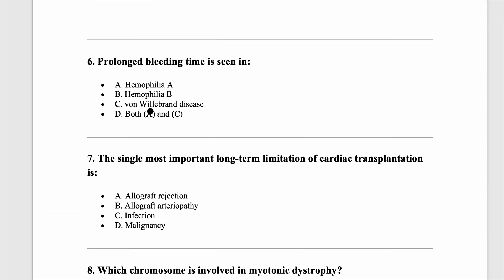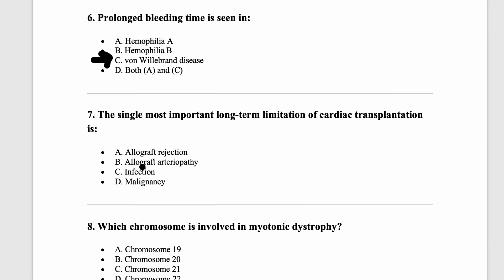Prolonged bleeding time is seen in — I don't think you will see these types of questions in 2025 PG, but the classical answer is von Willebrand disease. Even in this INICET, the most common inherited bleeding disorder goes to von Willebrand disease. In von Willebrand disease, in few variants where factor 8 is very low, you might also have prolonged clotting time.